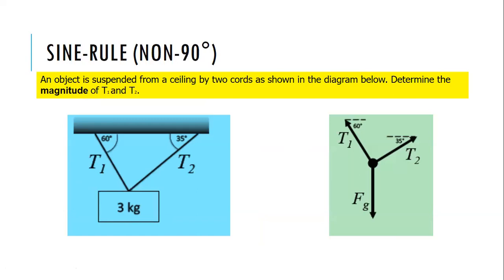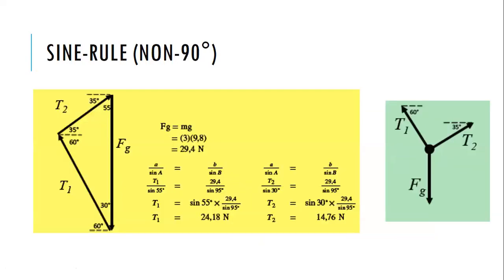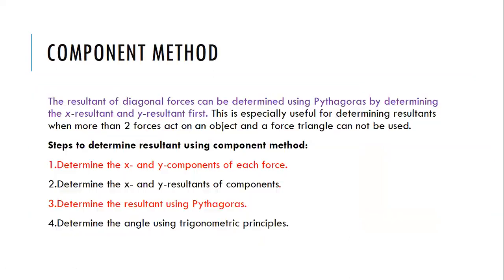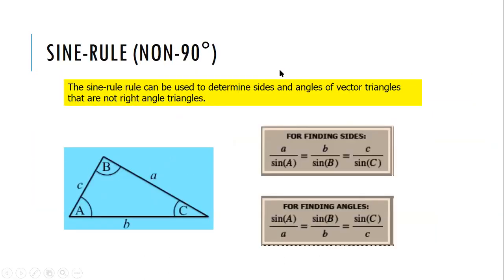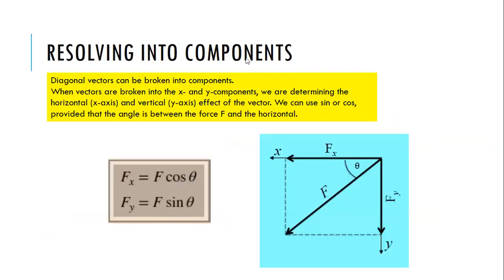Today I'm planning to discuss the component method. What we are going to do is use components when we have more than two vectors — for example three forces acting on an object — and find their vector sum, their total resultant. We break each vector into components, take all x-components and add them up, take all y-components and add them up, and then combine to find the resultant.